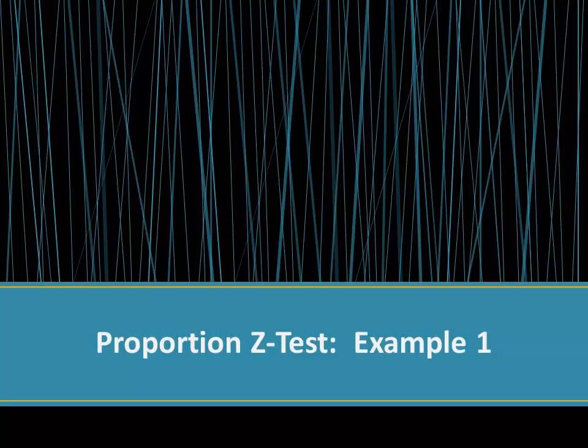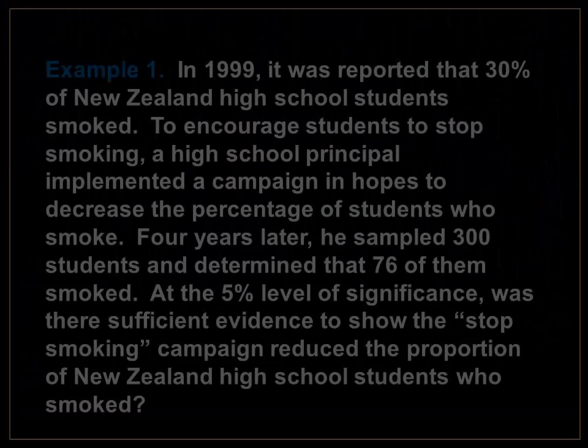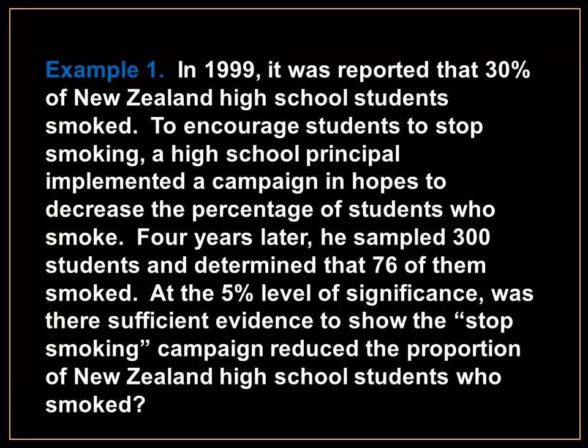The Proportion Z-Test. For example, in 1999 it was reported that 30% of New Zealand high school students smoked.